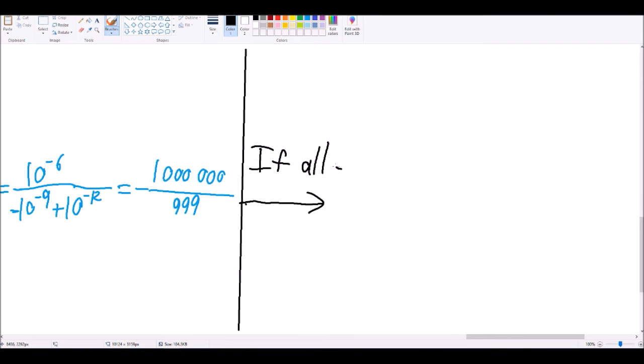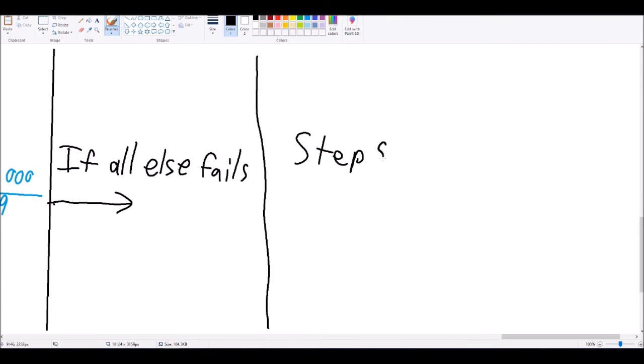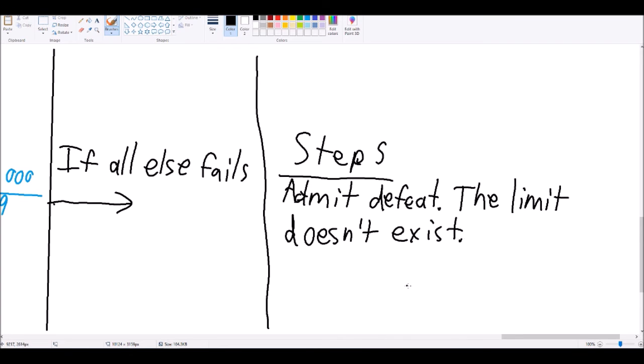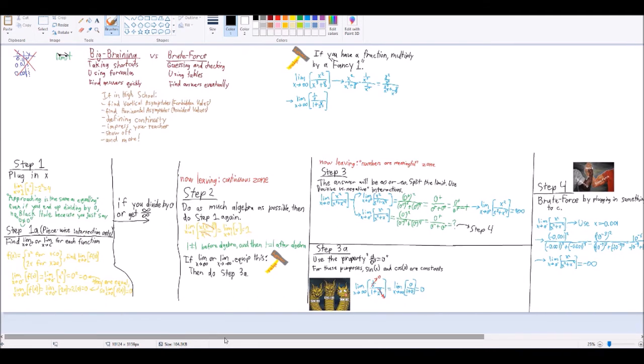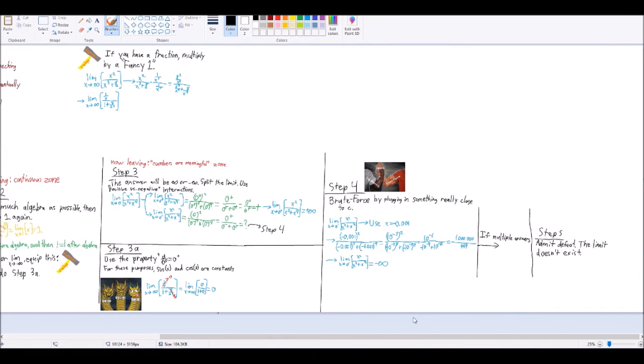And that's the flowchart. It's kind of a mess, but if you reach the end and you still find multiple answers, the limit doesn't exist. But really, step 1 is what you'll be doing most often, and you almost have to rig the function in order to get all the way to step 4.